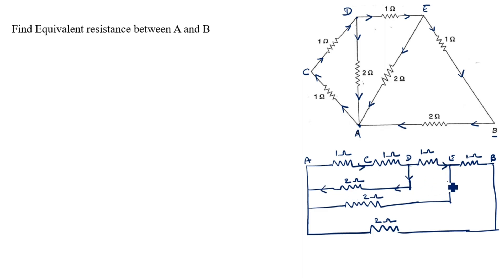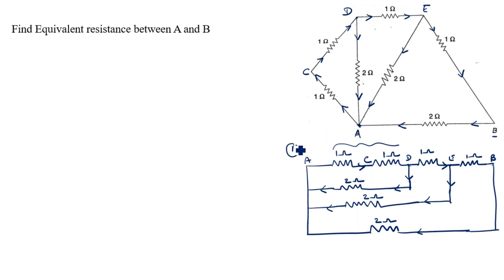The arrows go this way and come back, joining with A. Now we identify which resistors are in series and which are in parallel. The two 1 ohm resistors along the top path are in series, so we add them: 1 plus 1 equals 2 ohm.